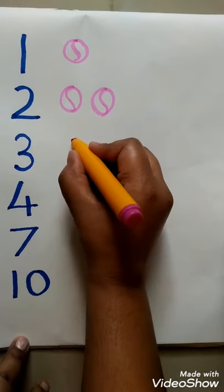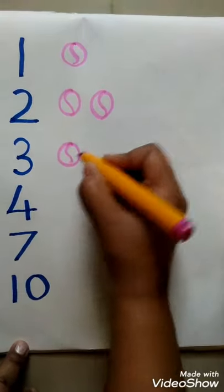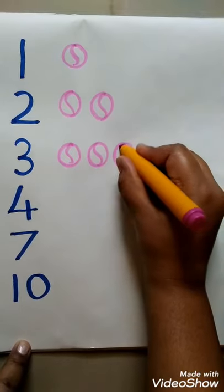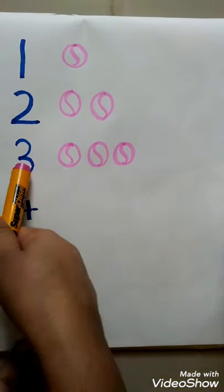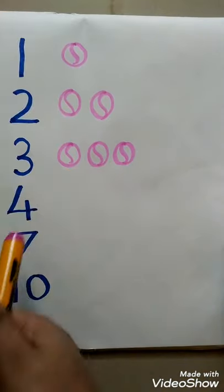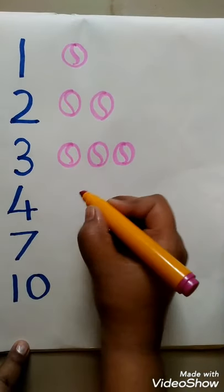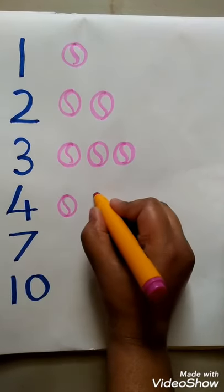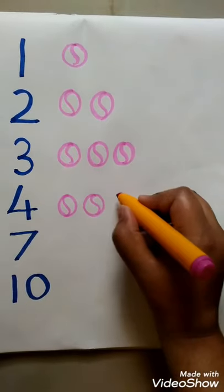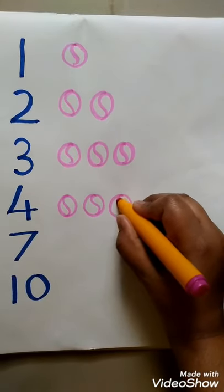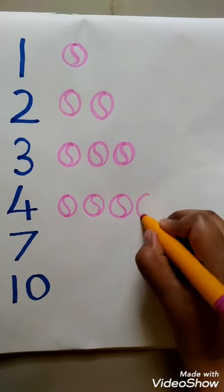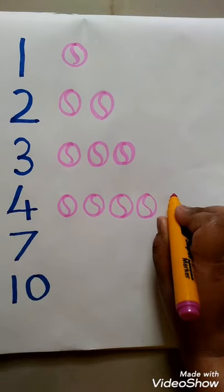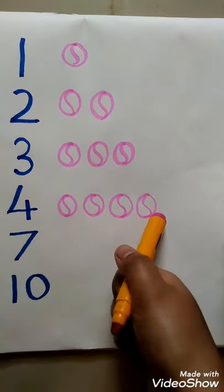Number 3 — how many balls? Count: 1, 2, 3. Stop. Number 3, 3 balls. Now number 4 — count, now it's your turn. Count. Yes: 1, 2, 3, 4. Should I draw one more? No. Number 4, 4 balls.